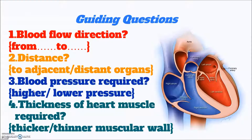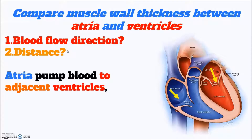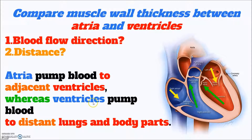By using these four guiding questions, we can compare the muscle wall thickness between the atria and the ventricles. For blood flow direction, the atria pump the blood to the adjacent ventricle. We also need to talk about the distance — adjacent ventricle means a very short distance. Remember, when comparing, we need to use a complete comparison: not only for the atria, but also mention the ventricle. Ventricles pump to distant lungs and body parts.